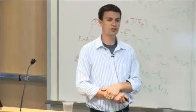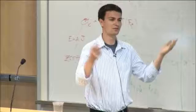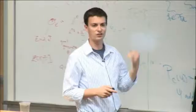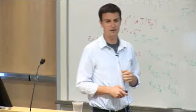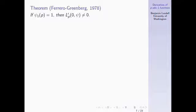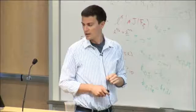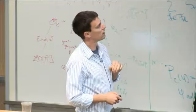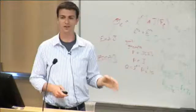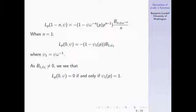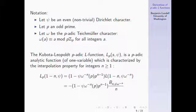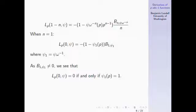Fortunately, we have an answer due to Ferrero and Greenberg. They showed that if ψ₁(p)=1 — the condition that forces the vanishing — then the derivative is definitely non-vanishing. So the order of the zero is exactly 1. And note that's exactly one more than the order of vanishing of the complex L-function, which takes the value of a non-zero Bernoulli number, hence has order of vanishing 0.